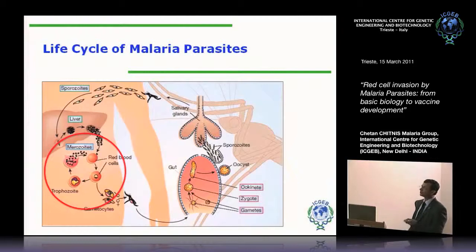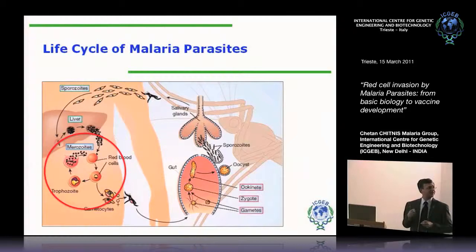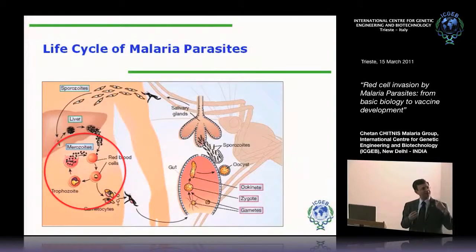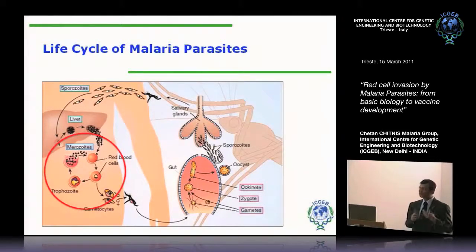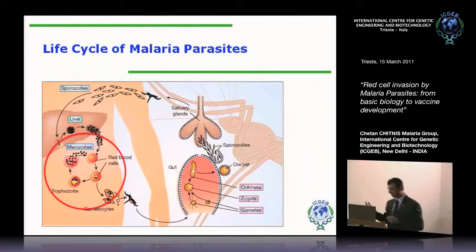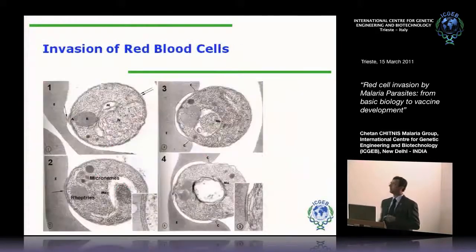All our work is focused on the blood stage of the parasite life cycle, and we are interested in understanding the process of red cell invasion. The questions I will talk about today are: what are the key molecular interactions involved in binding of the merozoite to red cells leading to invasion, and what are some of the signaling mechanisms involved in this process? I'll show how this work has led to a possible rationale for a vaccine.